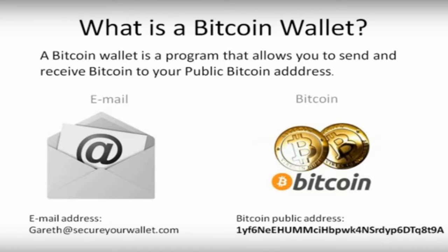A Bitcoin public wallet address always starts with the number one. When sending to this wallet address, or when other people are sending to this address, a lot of wallets or exchanges will tell you whether it exists and whether it belongs to a valid Bitcoin wallet. It shouldn't let you send to a non-valid address, although you can type in the wrong address and send to somebody else, which people have done. So always double-check that your address is correct. Usually you'll be copying and pasting this wallet address — not many people memorize them. You can keep your Bitcoin wallet address public and have other people see it.